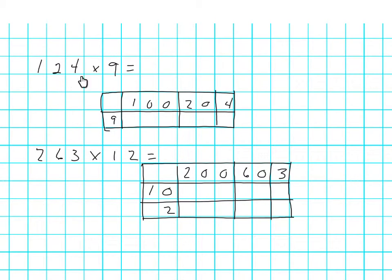Let's get started with the first one. I've got 100 multiplied by 9, it's going to be 900. I've got 20 multiplied by 9, is going to be 180, and four nines are 36.